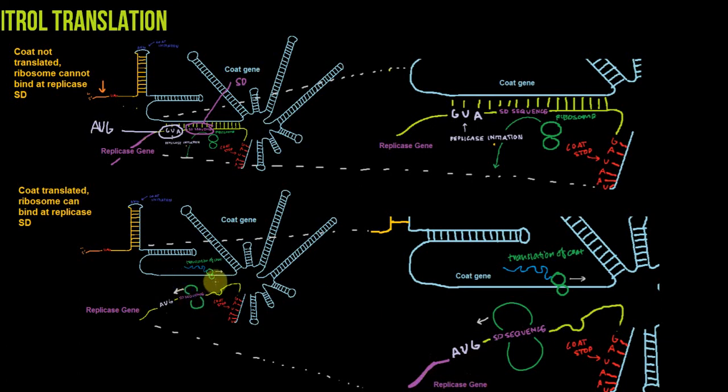This is a really interesting way that translation of other parts of the mRNA can result in translation of other genes, such as the replicase gene being controlled by the coat gene here. I hope this was interesting for you and I thought it's pretty cool and hope to see you in the future.